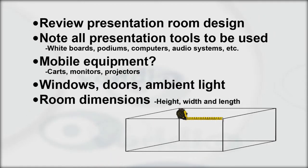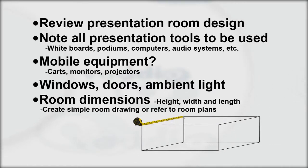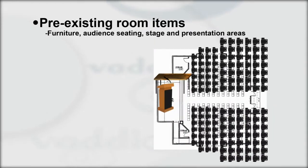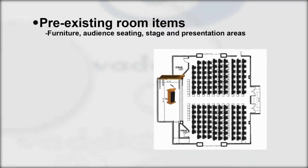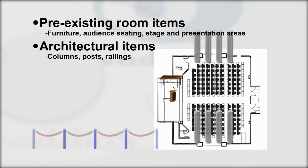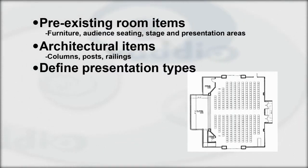Define all room dimensions — height, width, and length. Measure and create a simple room drawing or reference the existing room plans. Identify the locations of all pre-existing items in the room, and locate any and all other architectural items including columns, posts, and railings. Define the various types of presentations to be given in the room to help determine how the room will be used.